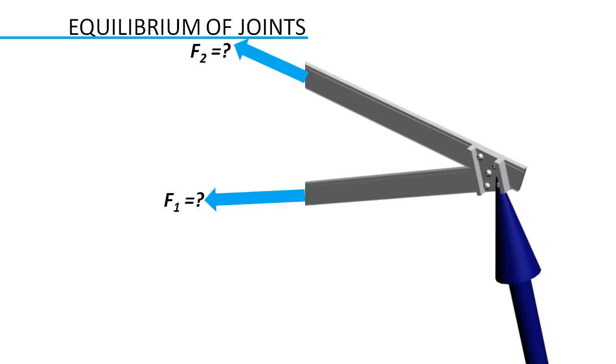Joint is in equilibrium in x direction, and joint is in equilibrium in y direction, so we can solve for both the unknown forces.